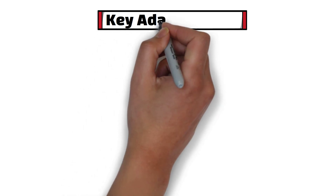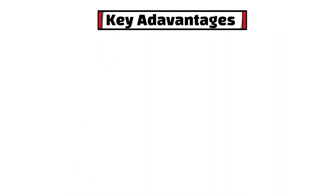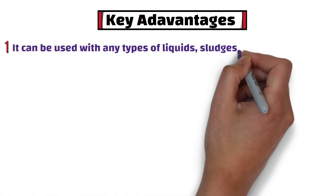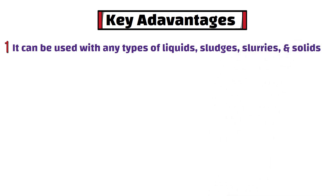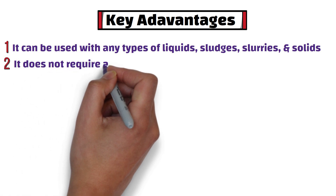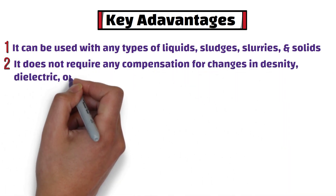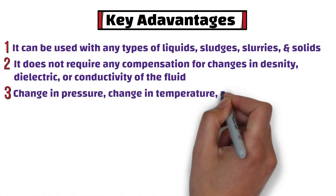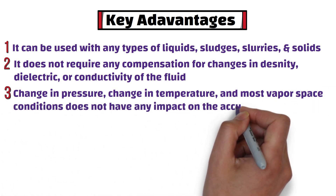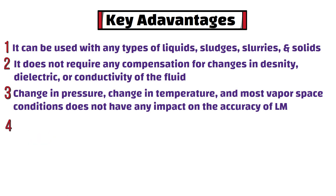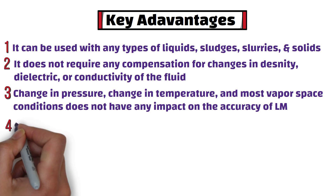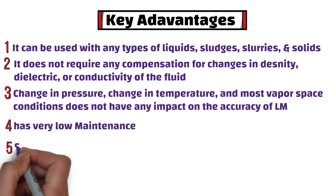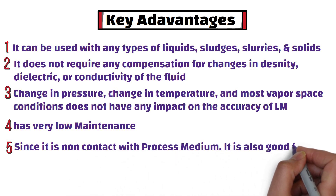Now let's learn the key advantages of radar level transmitter. Radar level transmitter can be used with any types of liquids, sludges, slurries, and some solids. This device does not require any compensation for changes in density, dielectric, or conductivity of the fluid. Changes in pressure, temperature, and most vapor space conditions do not have any impact on the accuracy of level measurements. Since it is not in contact with the measured media, it is also good for corrosive and dirty applications.